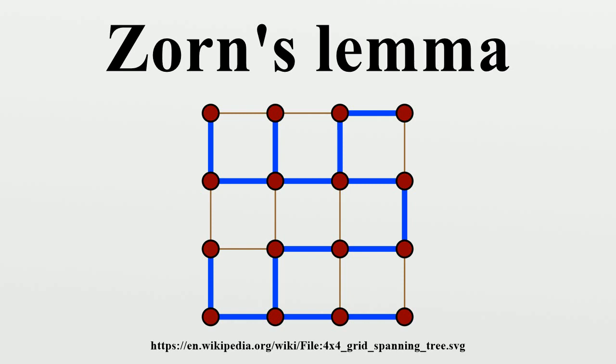Sketch of proof: A sketch of the proof of Zorn's lemma follows, assuming the axiom of choice. Suppose the lemma is false. For every totally ordered subset T we may then define a bigger element B(T), because T has an upper bound, and that upper bound has a bigger element. To actually define the function B, we need to employ the axiom of choice.